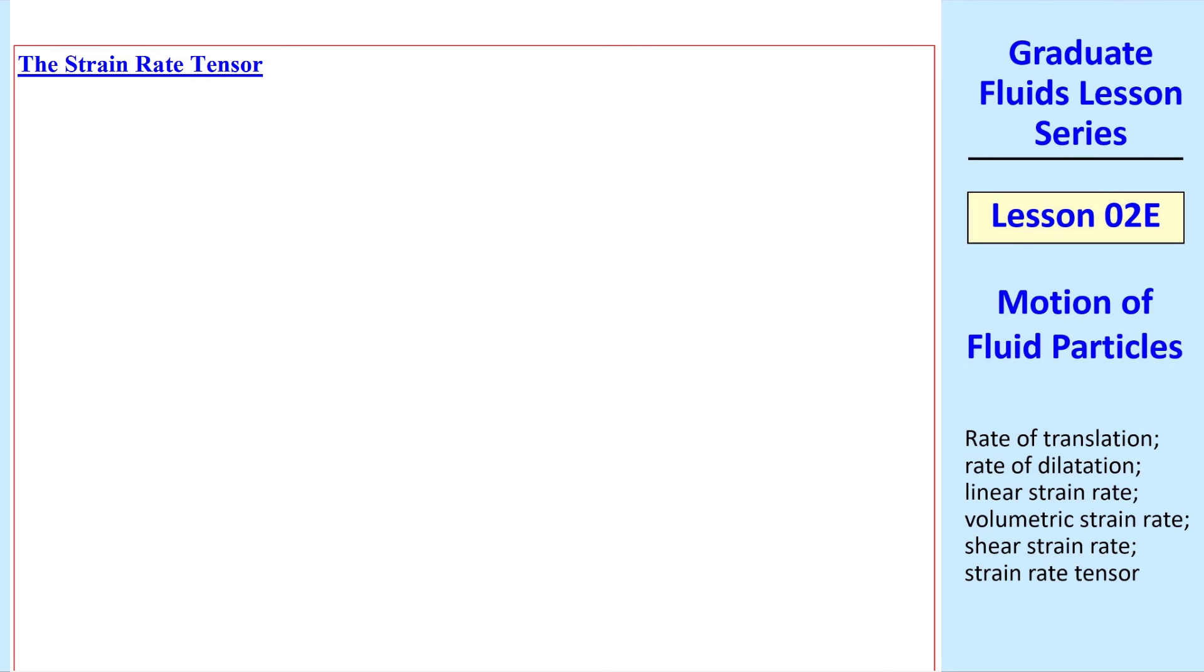Finally, let's talk about the strain rate tensor. I'll use capital Sij. I just note here that some authors use a little Eij or a capital Eij.